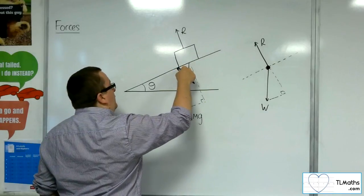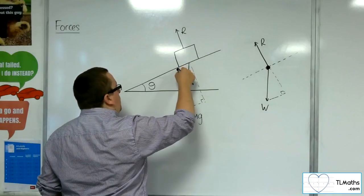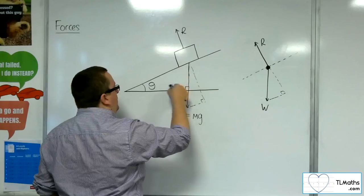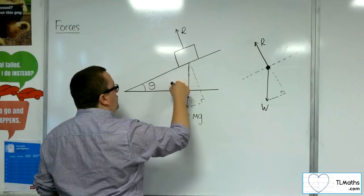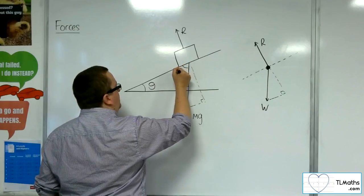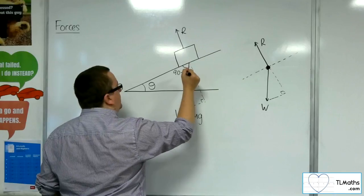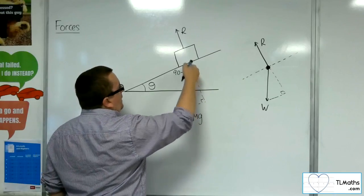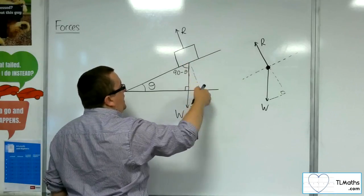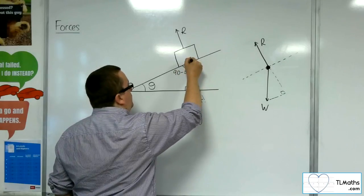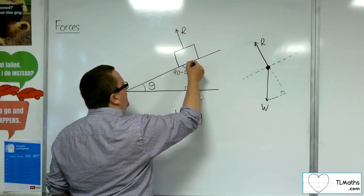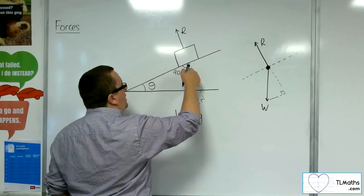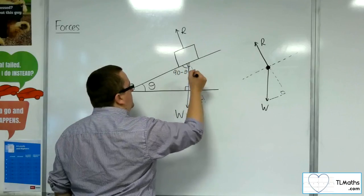This angle must therefore be 90 take away theta, in order for these three to add up to 180. So that's 90 minus theta. And I know that that will be perpendicular to this line, so I know that that's a right angle there. So that must mean that these two add up to 90, and so that angle is theta.